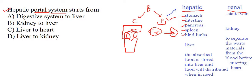All the blood from these organs goes into the liver through the digestive system. The significance of the Hepatic Portal System is that the food absorbed by the digestive system goes into the liver first to be stored. When needed, it is distributed to the body parts.